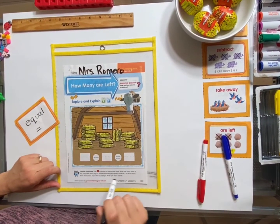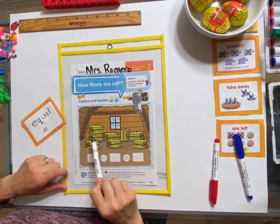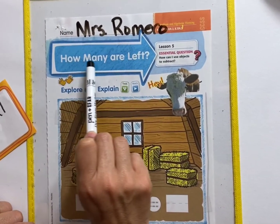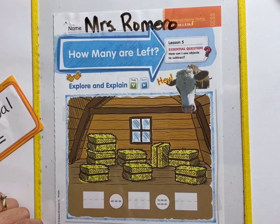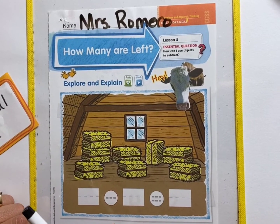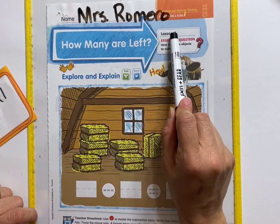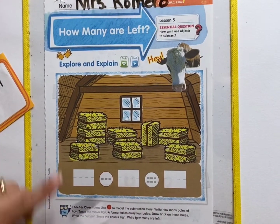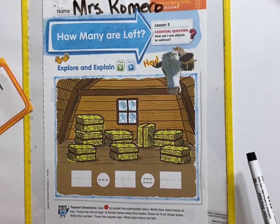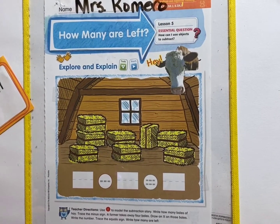Hi friends, let's find the math page that has a cow on it and the bales of hay. We're going to be studying how many are left. And we've already been talking about that in our previous math stories, our subtraction stories. This is lesson five. So let's take a look at this story. It says we need to write how many bales of hay we have. So let's count them.